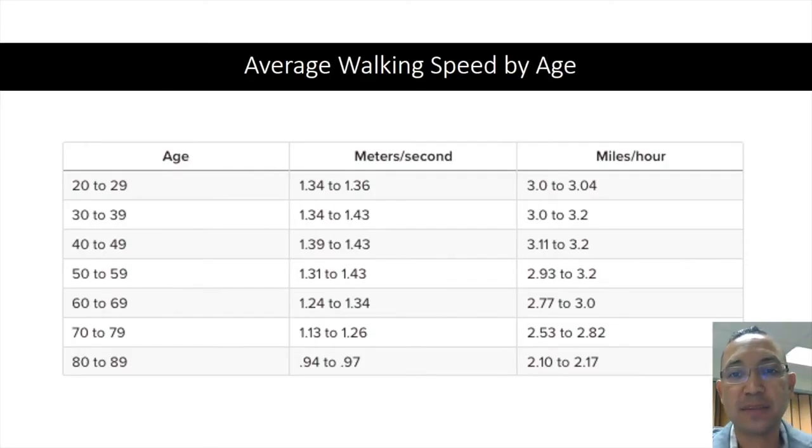Walking speeds are noted by age in both meters per second and miles per hour from age 20 to age 89.